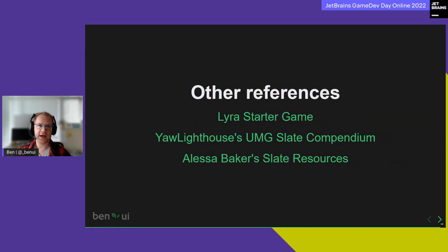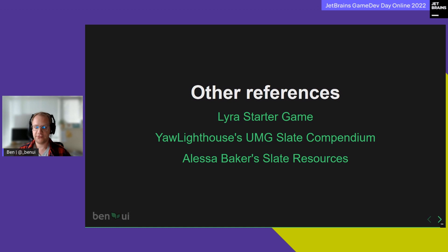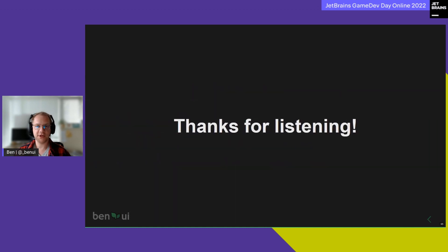For more references on how to create custom Slate widgets, check out the Lyra Starter Game project. Your Lighthouse has a really amazing Slate compendium — a huge document full of all the information you'd need about UMG and Slate. Alessa has some really good Slate resources as well, like a list of editor plugins with really good examples. The best way to learn this stuff is to look at examples — dig into the editor, see how they've implemented stuff. You can use the Widget Reflector to select widgets and see how they're declared in C++. Thanks for listening, that's pretty much it — we should have time for questions.